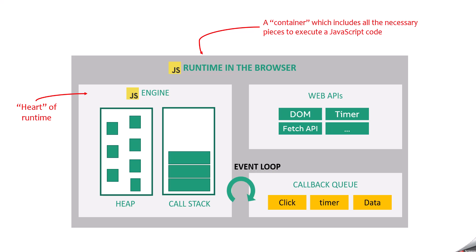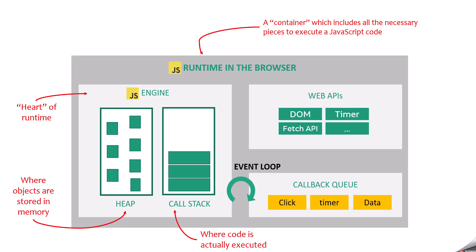A JavaScript engine is the heart of the JavaScript runtime environment. It consists of a heap where objects are stored, and a call stack where the code is actually executed. JavaScript is a single-threaded programming language, which means it can execute only one statement at a time.